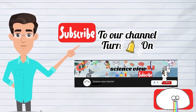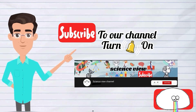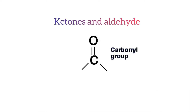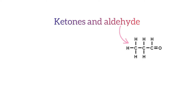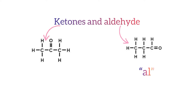Before that, make sure to subscribe to our channel and turn the notification on. Ketones and aldehydes have the same functional group, called the carbonyl group. This functional group is the carbon double bonded with the oxygen, but in different locations in the main chain. For aldehydes, the carbonyl functional group is always at the end of the main chain, therefore it gets the suffix '-al'. For ketones, it is within the main chain, therefore it gets the suffix '-one'.